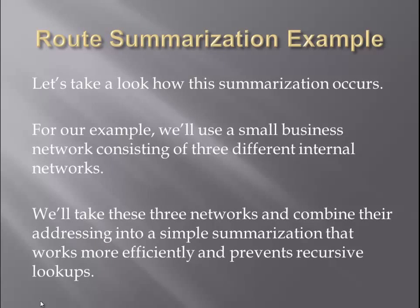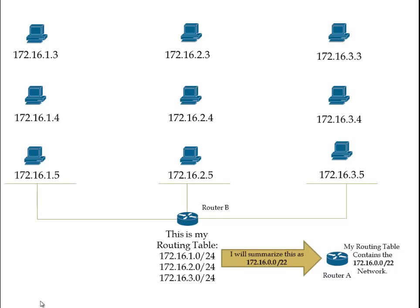Let's take a look at how summarization occurs. For our example, we'll use a small business that contains three different internal networks. We'll take these three networks and combine their addresses into a simple summarization that works more efficiently and prevents recursive lookups. Our three internal networks are the 172.16.1, .2, and .3 networks, all slash 24. All of these networks go into RouterB, which in turn stores them into the routing table.